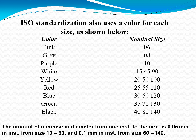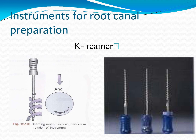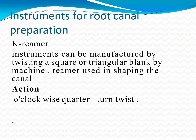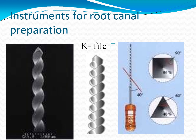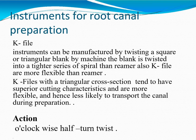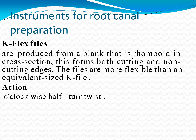The K reamer can be manufactured by twisting a square or triangular blank by machine. Its action is a clockwise quarter-turn twist. The K file is also manufactured by twisting a square or triangular blank, but the blank is twisted into a tighter series of spirals than the reamer, making the K file more flexible. K files with a triangular cross-section have superior cutting characteristics and are more flexible, and hence less likely to transport the canal. Its action is a clockwise half-turn twist.